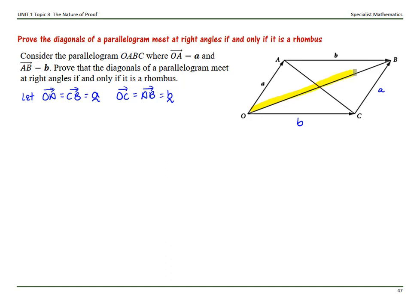OB is this diagonal here, with the arrow pointing in that direction. Vector OB is going to equal OA plus AB, which putting it back into our notation is going to be a plus b.